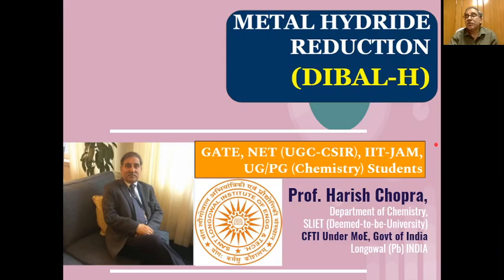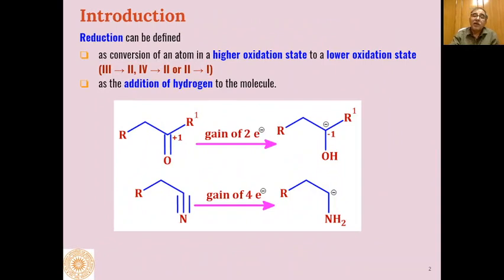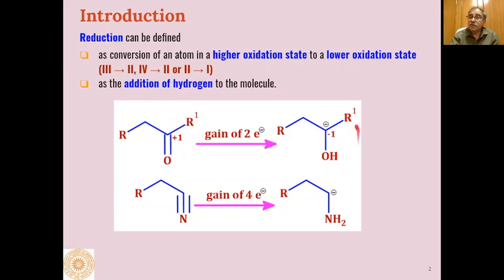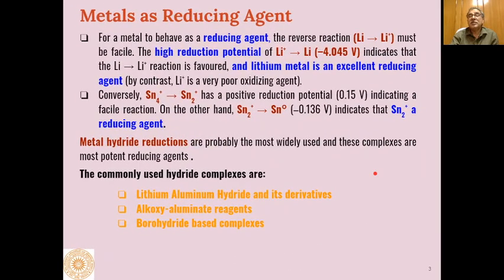As mentioned in the previous lecture, if an atom of a higher oxidation state is converted into a lower oxidation state, then we call that process reduction. In terms of reactions, if we add hydrogen across a molecule to give different types of products, those reactions are also called reduction reactions. The substances which catalyze or participate in those reactions are called reducing agents — a reducing agent will itself be oxidized and reduce the reactant into a product, i.e., the reactant gains electrons.